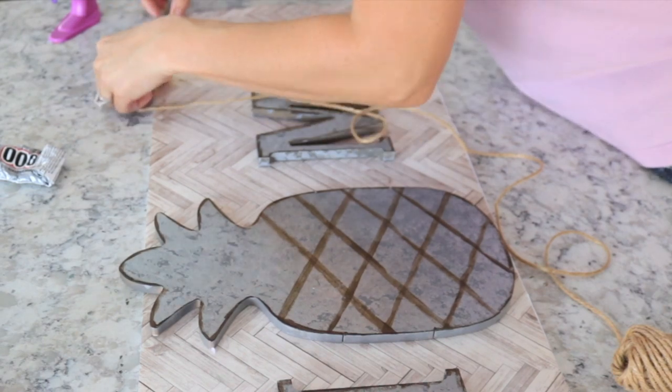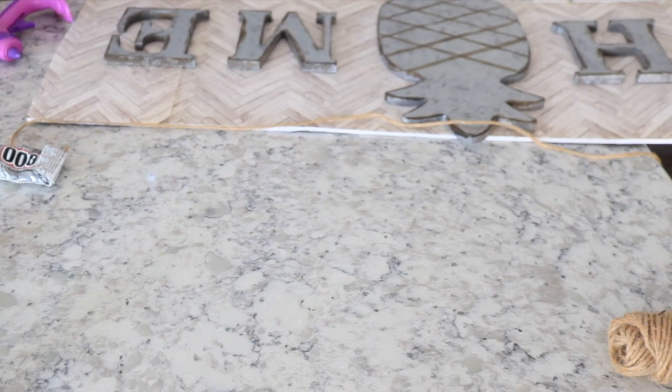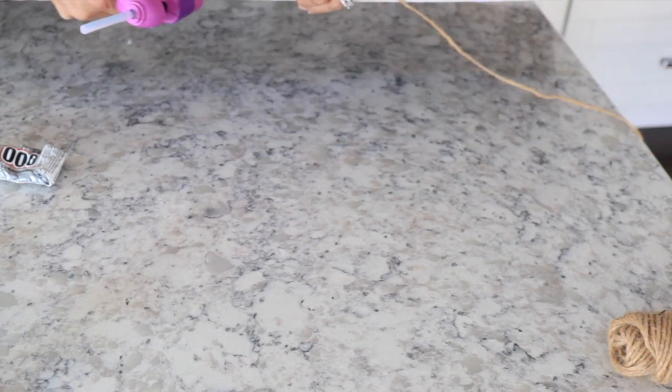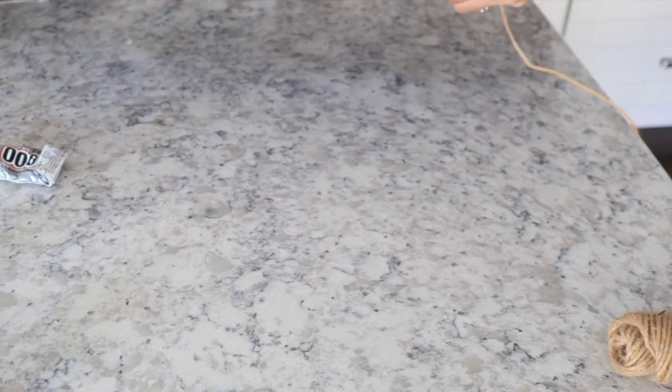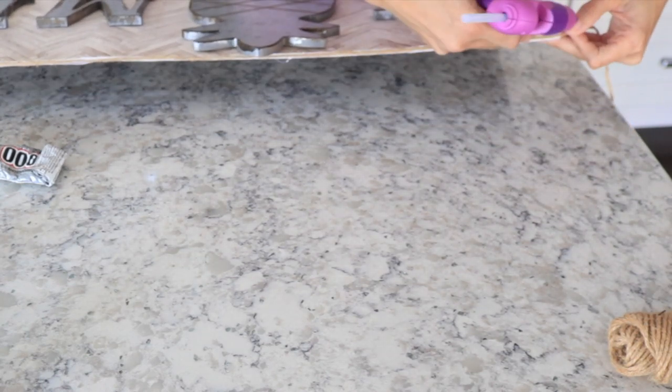And now I'm taking some twine that I have from Dollar Tree and I'm just going to kind of make a little border with it. It just didn't really feel completely finished because it's the foam board, so I'm just going to hot glue a little twine border and I think this finishes it off nicely and makes it look more complete.